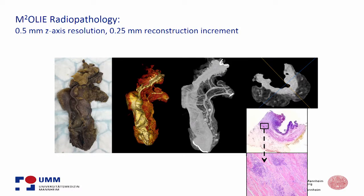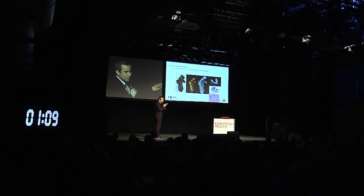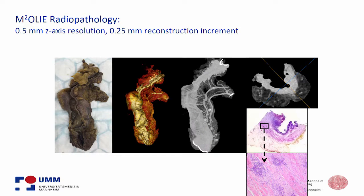We also do this in correlations with pathology. This is an example of ex vivo imaging — the highest resolution you currently get from CT imaging — to do correlations systematically between radiology and pathology regarding the accuracy of that imaging data and to get further correlations from this imaging data.